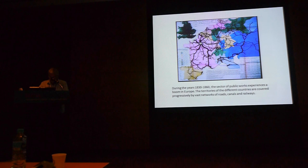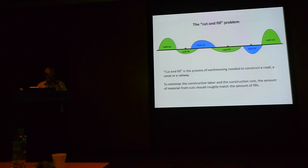During the years 1830-1860, the sector of public works experiences a boom in France and more generally in Europe. The territories of the different countries are covered progressively by a vast network of roads, canals and, after 1842, of railways. These achievements require many tedious calculations of surfaces of cut and fill and cross sections of the ground. Cut and fill is the process of earth moving needed to construct a road, a canal or a railway. You have to cut land when the ground level is too high and then transport this land to fill the places where the ground level is too low. And to calculate roughly the volume of land to be transported, you have to decompose this volume in thin vertical slices, evaluate the area of each slice and sum all of these elementary areas.